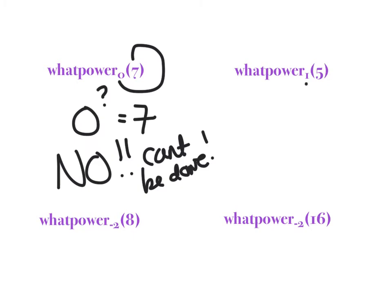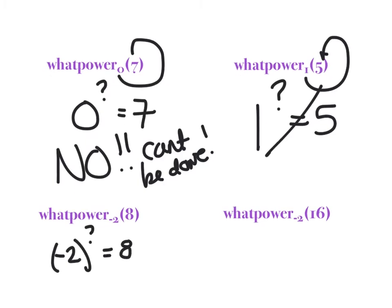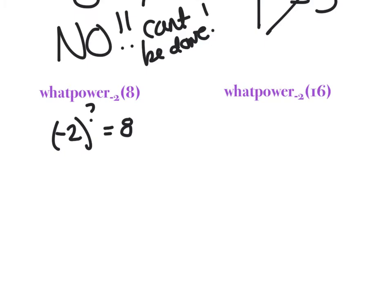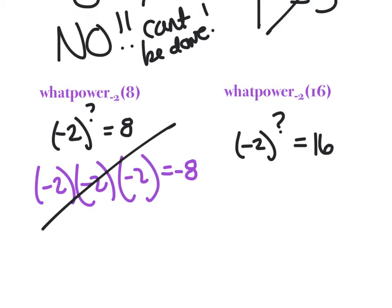What power of 1 is 5? So 1 to what power is 5? Well, what's 1 to any power? 1 to the 1st, 1 squared, 1 cubed, 1 to the 4th — that can't be done either. Negative 2 to the what power is 8? Well, you might be thinking at least I can do this one — maybe thinking 3 because 2 cubed is 8. But what about negative 2 times negative 2 times negative 2? I think that would get me negative 8. So that one can't be done either. And negative 2 to what power is 16? Well, I know 2 to the 4th is 16, and negative 2 times negative 2 times negative 2 times negative 2 — that one can be done. So I'm going to say that answer is 4.